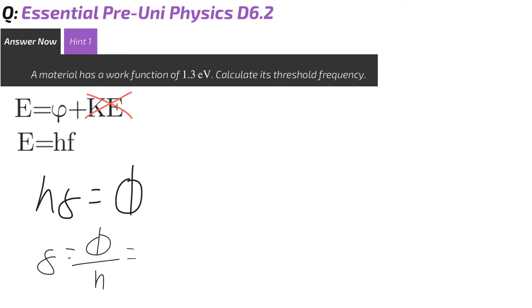The work function was 1.3 electron volts, so we're going to times that by 1.6 times 10 to the power of minus 19 to convert it into joules. And H is 6.63 times 10 to the minus 34. Putting that into your calculator, and you will get 3.137 times 10 to the power of 14 hertz.